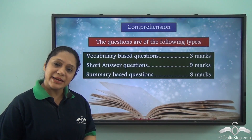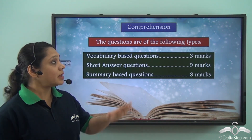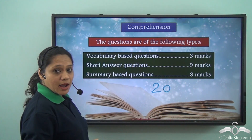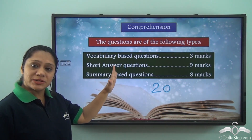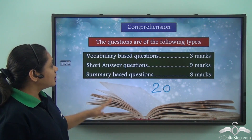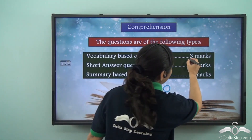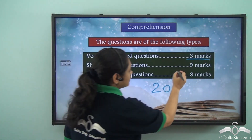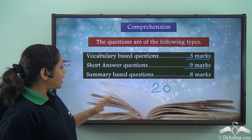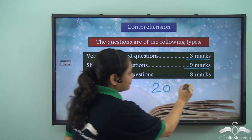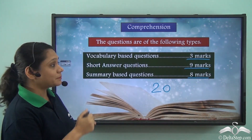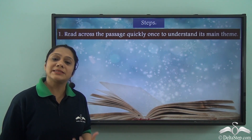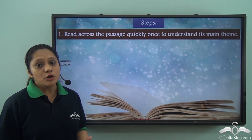In the ICSC Class 10 board exam, the comprehension exercise is worth 20 marks. The questions are of the following types: vocabulary-based questions for 3 marks, short answer type questions for 9 marks, and summary-based questions for 8 marks. Now let us look at the steps we need to follow to do the comprehension exercise.